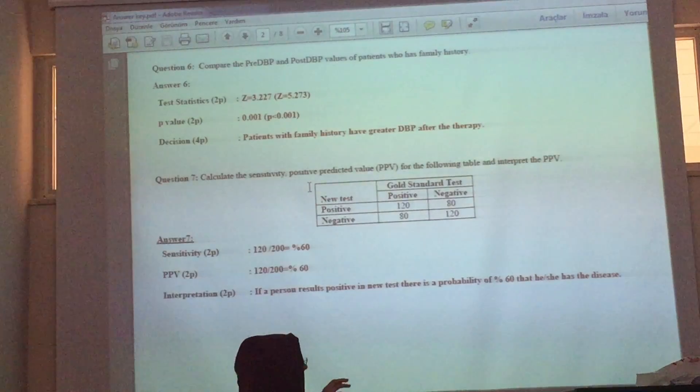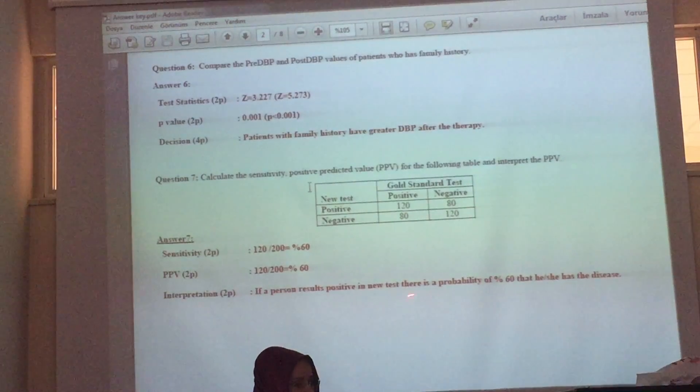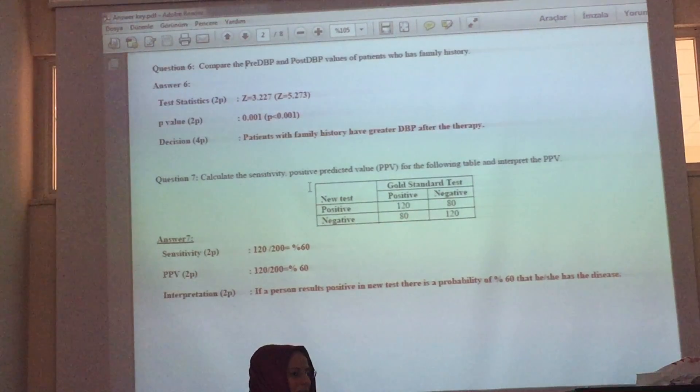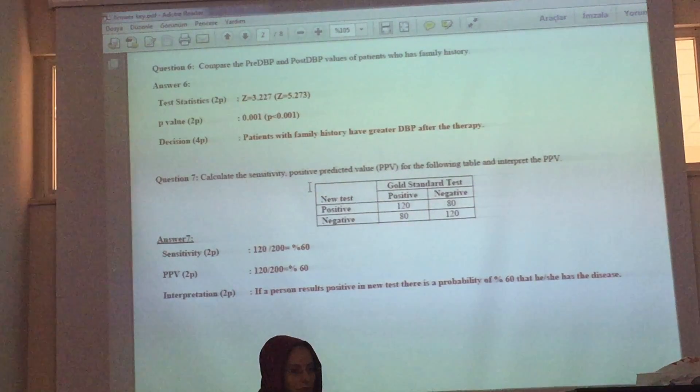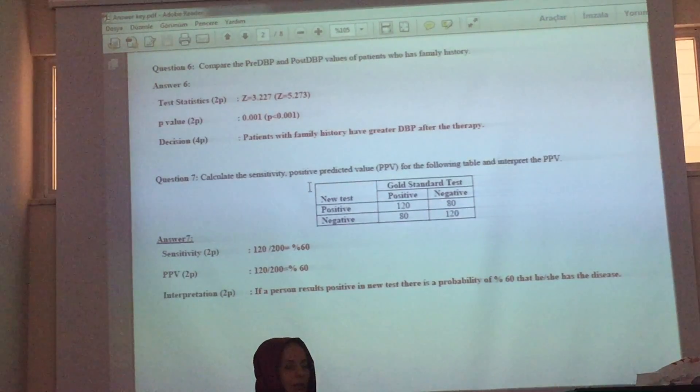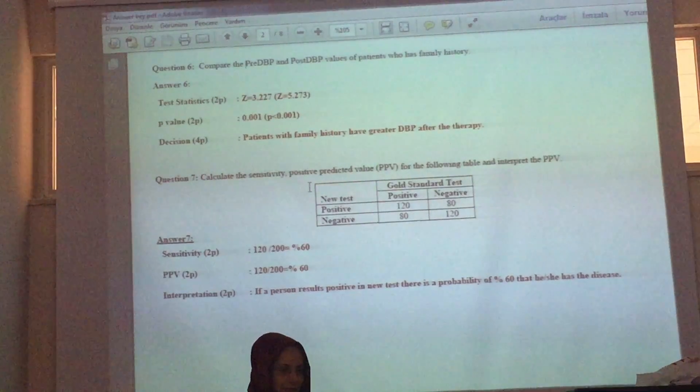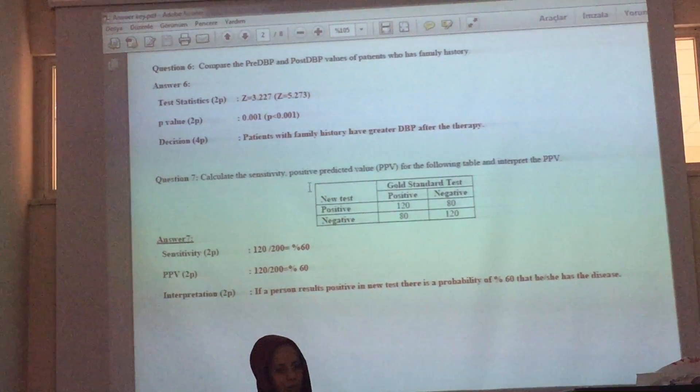You will just calculate and write, these are your answers. You will just write this red one. You will write test statistics, p-value and your result, your decision. You get the p-value and test statistics from the computer. Especially if you calculate it, then you will get them from the computer. This is not the issue.